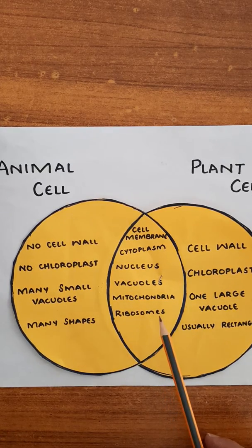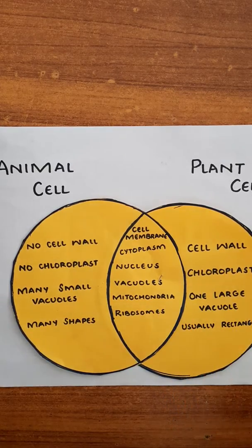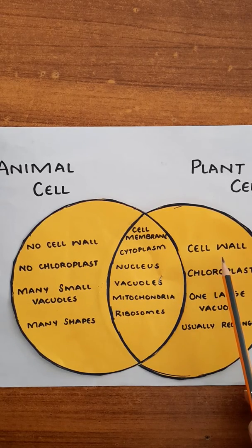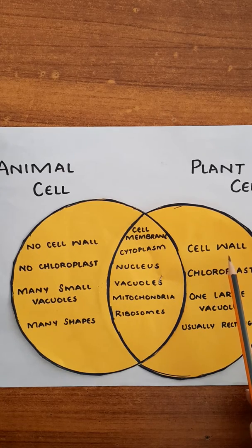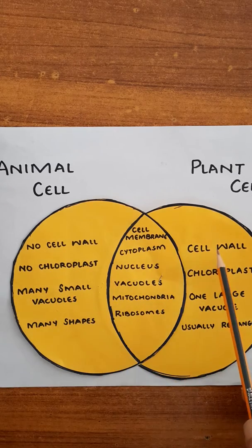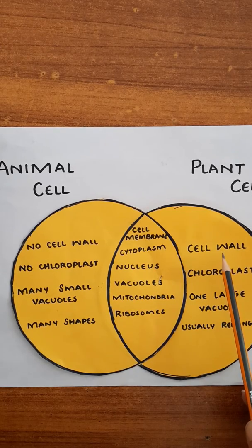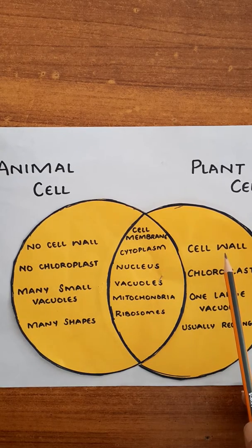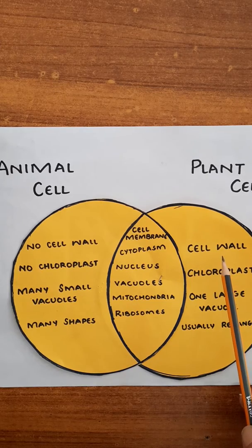Now we move towards the differences. The first difference comes from the presence of the cell wall. The cell wall is the outer covering of the plant cell and is not present in the animal cell. The cell wall is made up of a tough material called cellulose, which gives rigidity to the plant cell. Due to the presence of the cell wall, plants become rigid and hard.